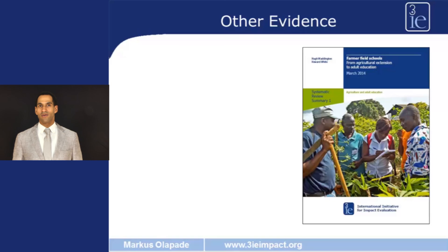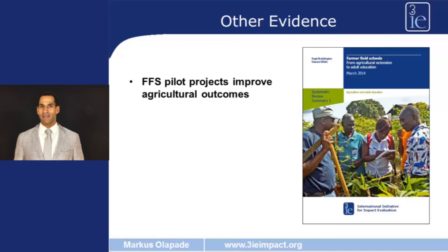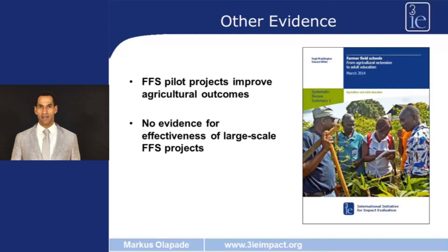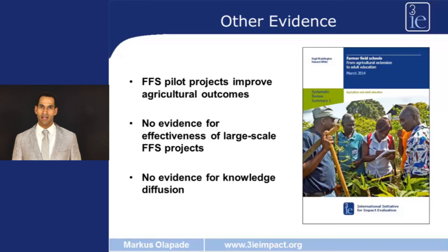This is already the end of this video. If you are interested in farmer field schools, I urge you to pick up the study by Davis and co-authors. You can also have a look at the 3IE-supported systematic review on farmer field schools by Waddington and co-authors. This review looked at 500 documents and finds that farmer field schools are most effective when in a pilot phase — once they go to scale, the positive effects disappear, possibly due to implementation problems such as finding and training facilitators. Another interesting result is that there is no diffusion of knowledge from participant farmers to non-participant farmers.